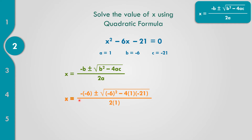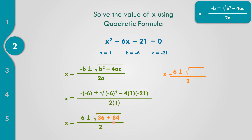Let us replace all values into the quadratic formula. That becomes negative times negative 6, plus or minus the square root of negative 6 squared minus 4 times A equals 1 times C equals negative 21, all over 2 times 1. Negative times negative gives positive 6. Negative 6 times negative 6 equals positive 36. Negative 4 times 1 is negative 4. Negative 4 times negative 21 equals positive 84, all over 2. Adding 36 plus 84 equals 120.